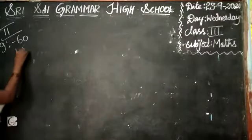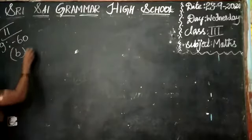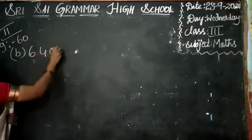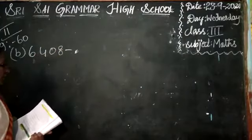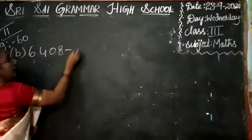So I am saying B1, A1 is done for you. I am saying B1 is 6, 4, 0, 8. And we are going to write this: 6,408.